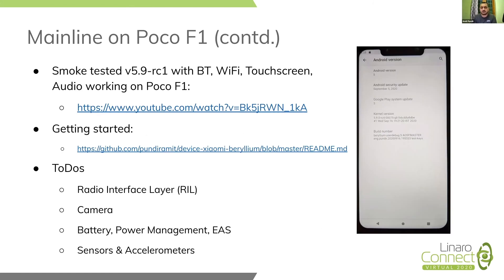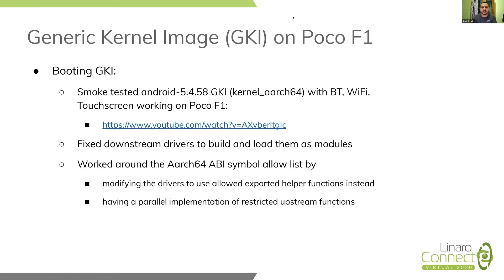We have uploaded a video of mainline kernel booting on POCO F1. It runs 5.9 RC1, but we do rebase our tree with almost every RC. Please check out the readme page for instructions on how to get started, because a lot of it is still a to-do list. We also have Android GKI booting on POCO. Since we already had GKI booting on Dragonboard 845C we got a head start, but it did require a few downstream driver changes to build and load them as modules, and a few changes to work around the restricted ABI symbols list which John and Todd mentioned in a previous session.